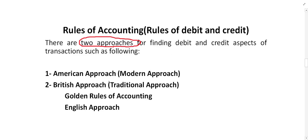The first approach is called the American approach, also known as the modern approach. The second method is called the British approach, or the traditional method, also known as the golden rules of accounting. These are different names for the two approaches used to identify the rules of debit and credit.